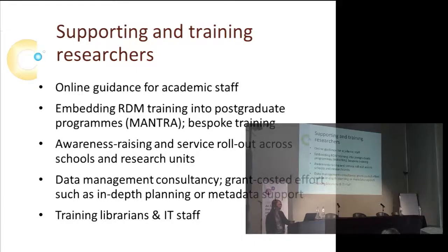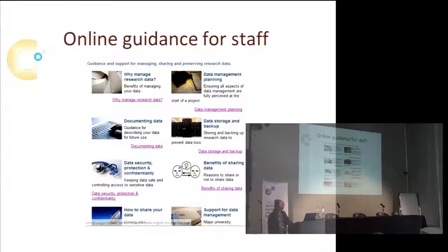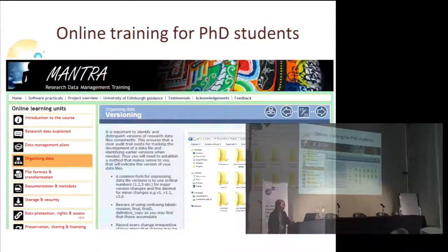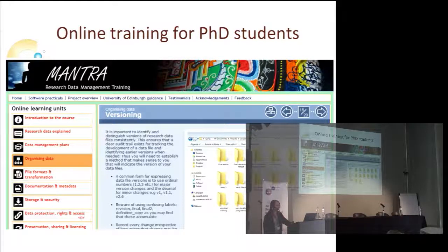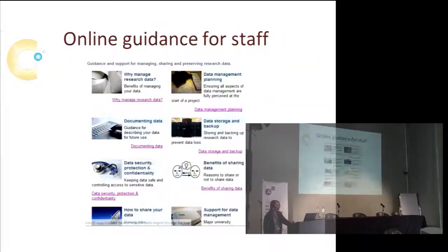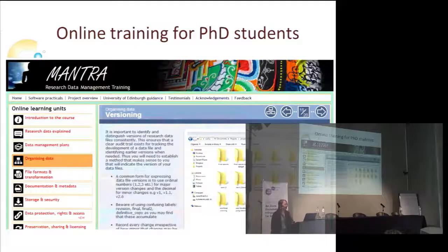We also need to train librarians and IT staff to raise their game. This is what the online guidance looks like — everybody's doing it now. We've had that in place since 2009 but we recently revised it. We use Google Analytics but need to find out more about whether it's meeting researchers' needs; one gap is costing, which is a tricky one we'll work on in the roadmap.